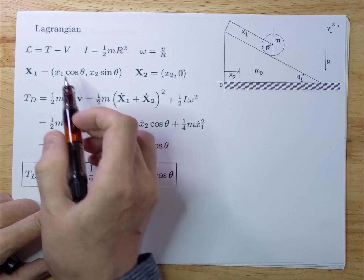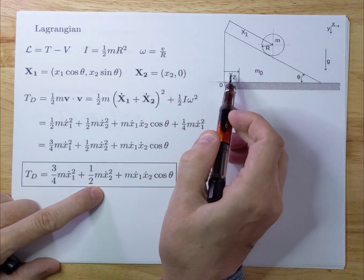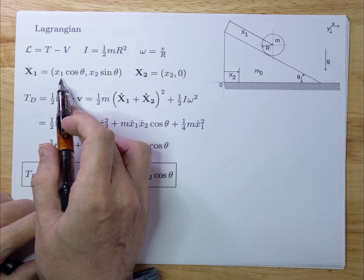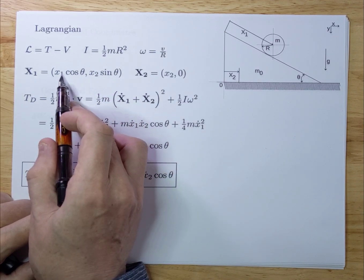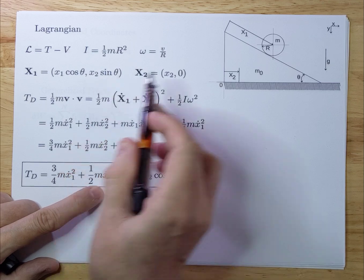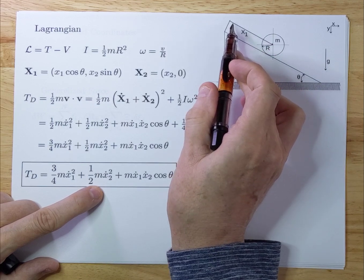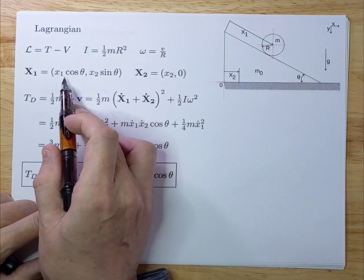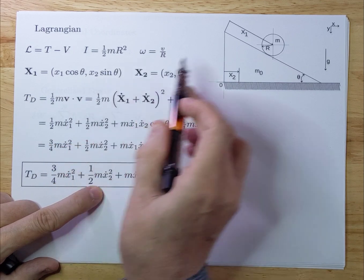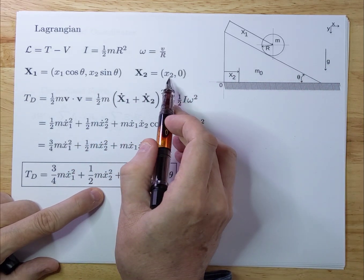Now what is the speed? We have to calculate the kinetic energy of the disc, and the speed of the disc is a combination of two speeds. x1 can be taken in two directions: the x-direction gives x1 cosine theta, and the y-direction gives x1 sine theta — both positive since y is taken positive going downward. For x2, you only have a component in the x-direction, so that's x2.